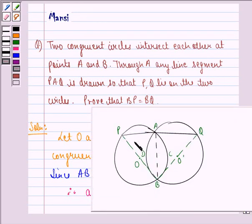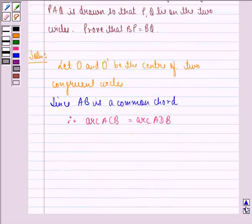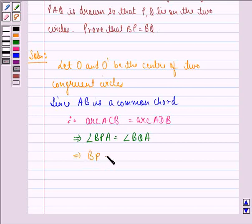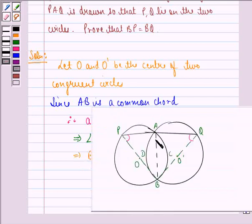Now, this implies that angle BPA, that means this angle, is equal to angle BQA, that means this angle. We see that if this arc is equal to this arc, then the angle that this arc subtends will be equal to the angle that this arc subtends.